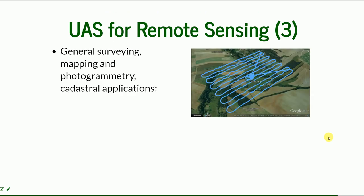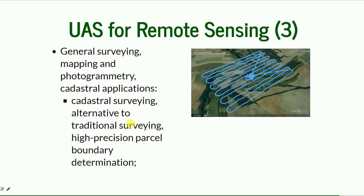There is also general surveying, mapping, and photogrammetry for cadastral applications. All spatial uses of UAS start with general surveying, but the results can be applied across many different areas. This cadastral surveying can serve as an alternative to traditional surveying and for high-precision parcel boundary determination, though there are still questions about precision and suitability for safety-critical purposes.